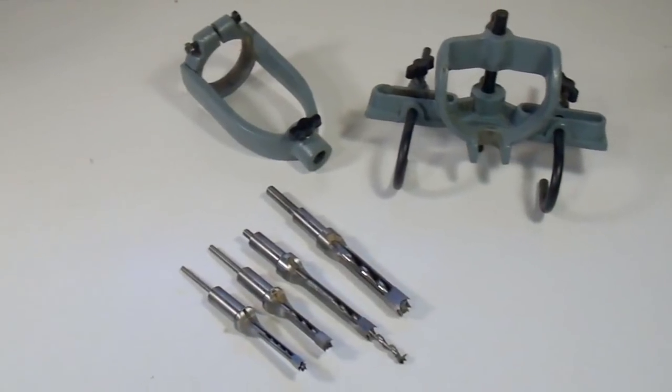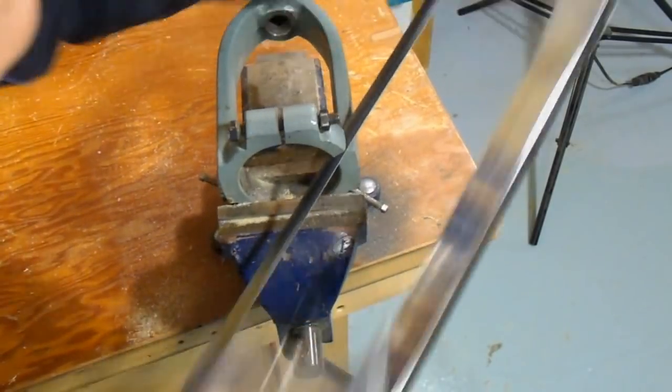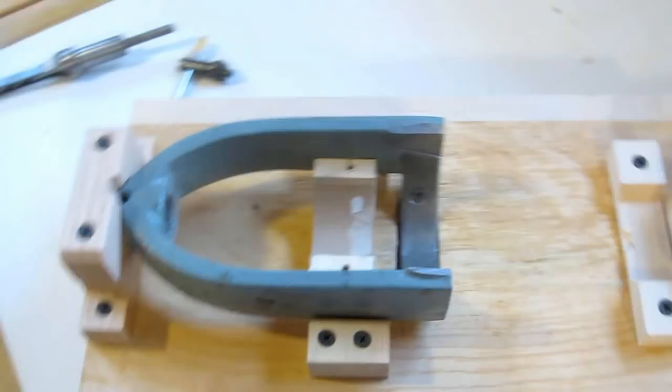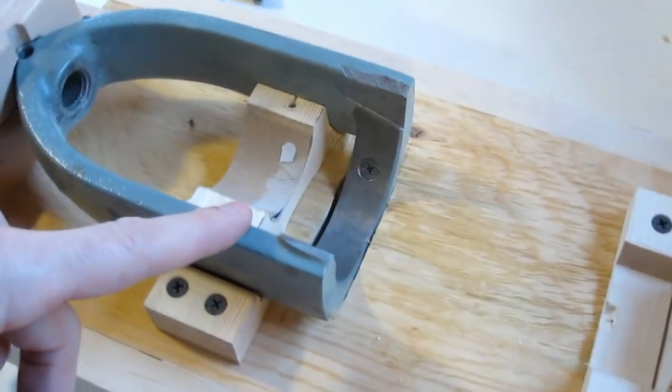I started with one of these drill press hollow chisel mortiser kits. I had to cut the bracket for this kit apart so that I could fit a hand drill into it. I mounted my chisel holder with this part cut out on a piece of plywood.